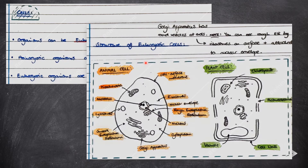Let's have a look at some diagrams of animal and plant cells. You can distinguish between the Golgi apparatus and rough endoplasmic reticulum by seeing that the rough endoplasmic reticulum has ribosomes on its surface and is continuous with the nuclear envelope, whereas the Golgi apparatus has round vesicles at the end.